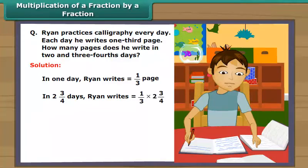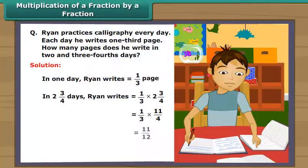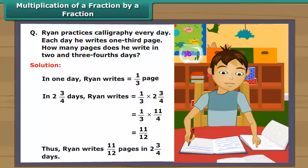This is equal to one upon three multiplied by eleven upon four, which is eleven upon twelve. Thus Ryan writes eleven twelfths pages in two and three-fourths days.